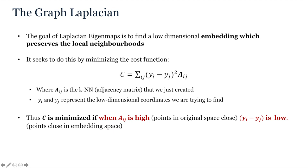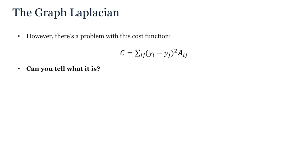However, our goal with embedding is then to find a new Euclidean spacing of points which will preserve these local neighbourhoods. The Laplacian eigenmaps method specifically does this by minimising the following cost function, where A here is the k-nearest neighbour adjacency matrix that we just calculated, and Y represents the embedding coordinates. From this, hopefully you can see that C will be minimised if, when Aij is high, such that the points in the original space are close, then Yi minus Yj will be low, meaning that the points are also close in the embedding space. There are, however, a few small problems with this specific cost function. Can you tell what they are? Try pausing the video and answering this in the Keats quiz.